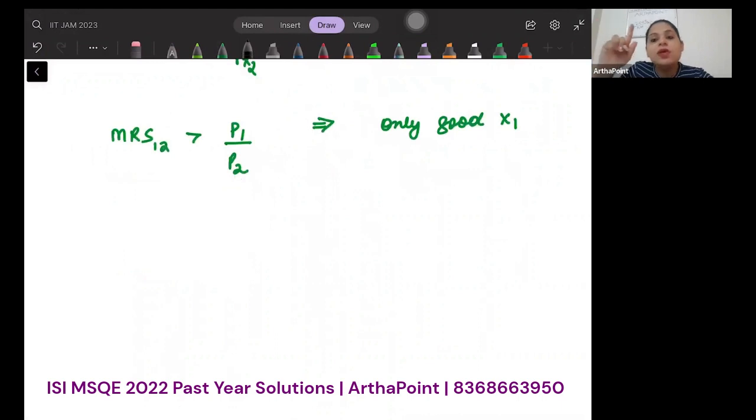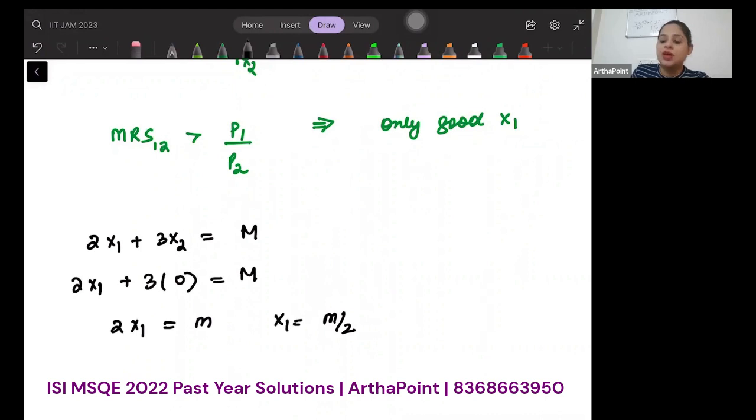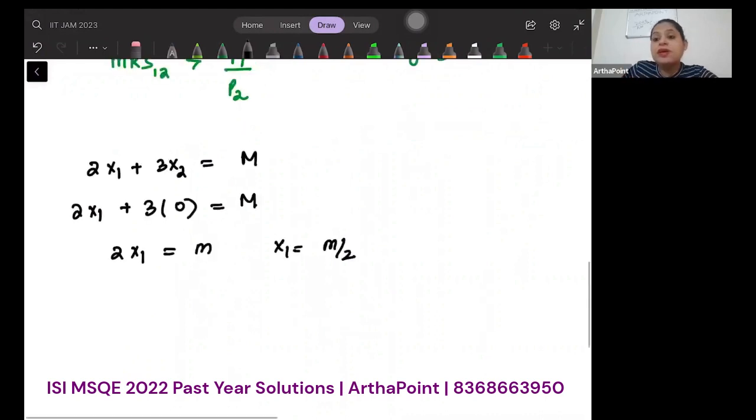Now, if I'm only consuming good x1, put it back in the budget line. My budget line is 2x1 plus 3x2 equals M. 2x1 plus 3 into 0 equals M. I am not consuming x2. So 2x1 is M, so x1 is M by 2.